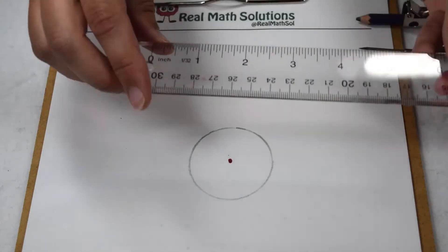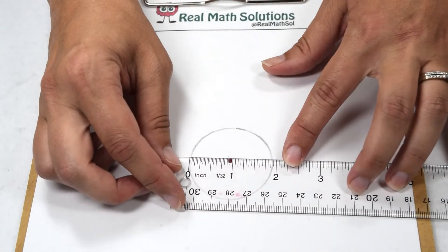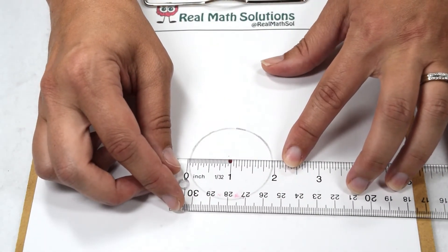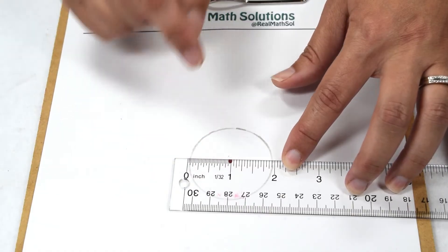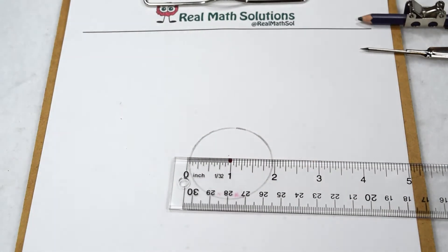Let's check to see if we did get our one inch radius. So I'm going to take my ruler and measure from the outside edge to the center point of the circle. And we see that we came out with a one inch radius on our circle.